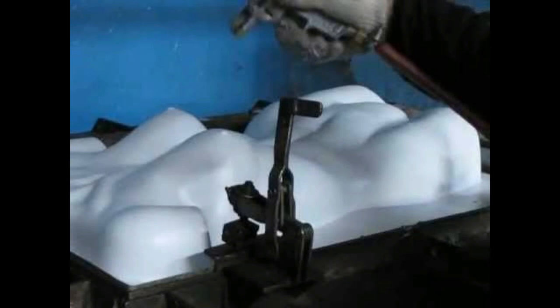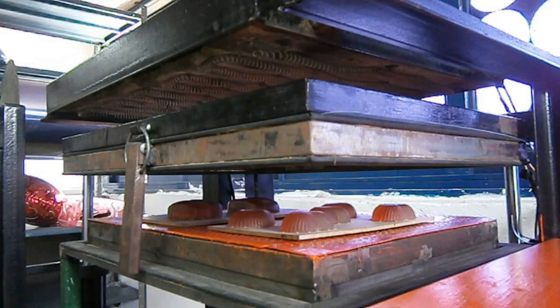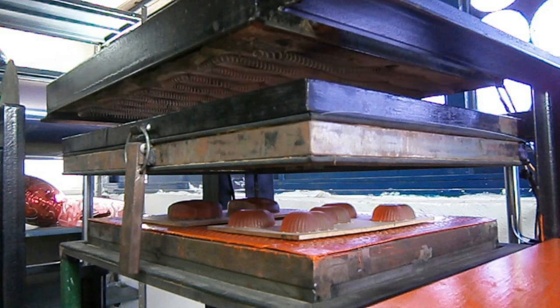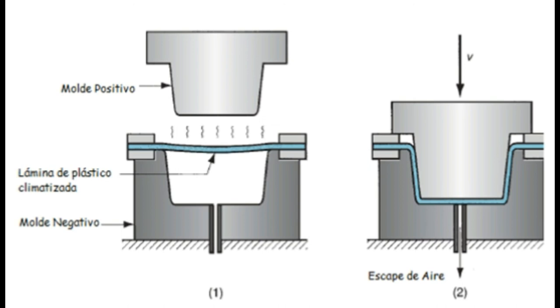El termoformado es un proceso secundario que consiste en dar forma a una lámina de un termoplástico. Consta de dos pasos principales: calentamiento y formado. El calentamiento se realiza por medio de calentadores eléctricos en ambos lados de la lámina; la duración del ciclo debe ser suficiente para ablandar la lámina dependiendo del tipo de plástico, el espesor y su color. Los métodos de termoformado se clasifican en tres categorías. El primer método usa un par de moldes, positivo y negativo, que se aplican contra la lámina de plástico caliente forzándola a adquirir la forma deseada, sin usar vacío ni presión de aire.